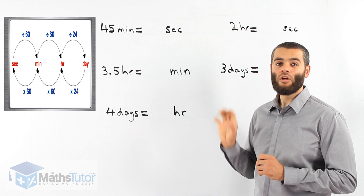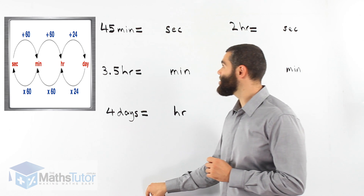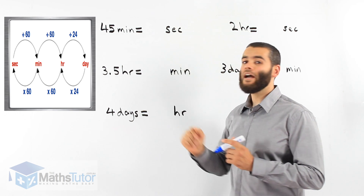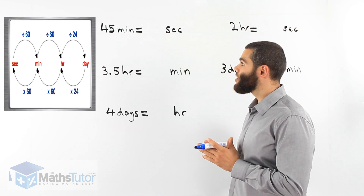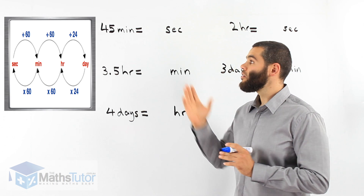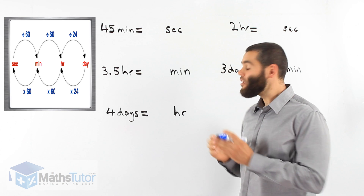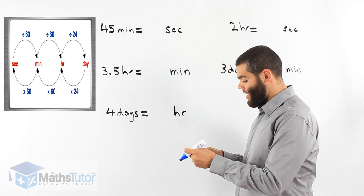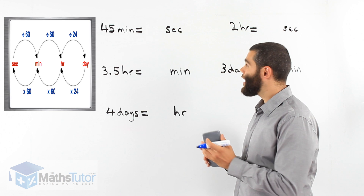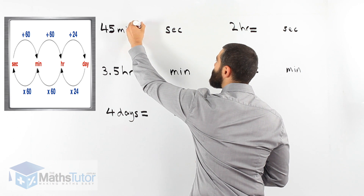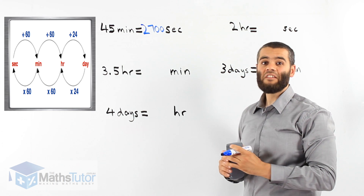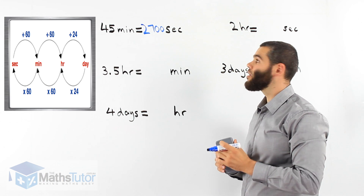Let's do some examples — you'll notice it is pretty simple. We have 45 minutes and we want to know how many seconds that is. We're going from minutes back to seconds. The process says we have to multiply by 60. So we grab our calculator: 45 minutes times 60. Our answer is 2,700 seconds. There are 2,700 seconds in 45 minutes.